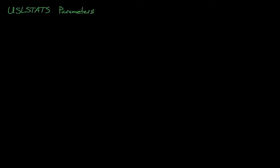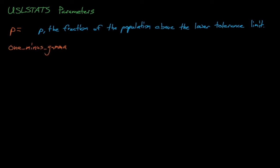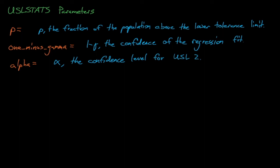So lastly, what parameters control the USL stats calculation? The p equals parameter describes p for the confidence interval, which again is the probability that a randomly sampled point will be beyond our limit. For a 95-95 confidence interval, p again equals 0.95. The 1 minus gamma parameter describes the confidence of the statistical fit. The gamma parameter is actually the significance level of the distribution's fit, which represents the false positive probability for this distribution.